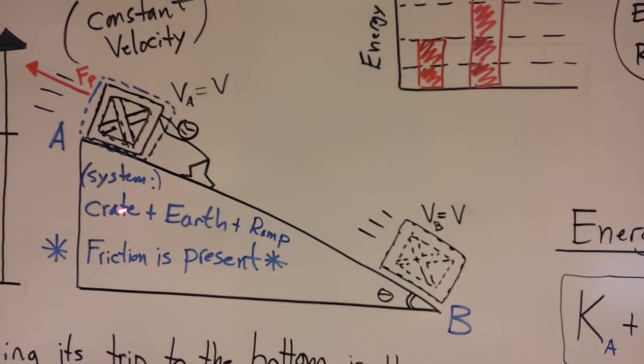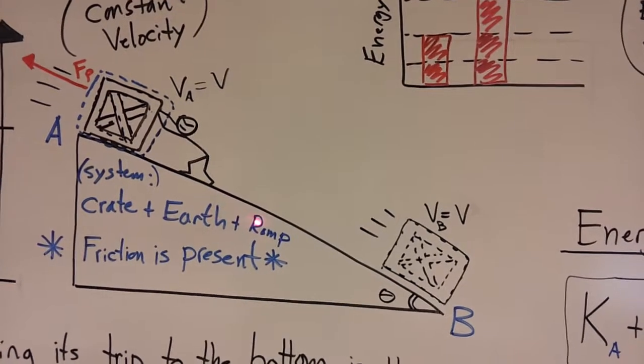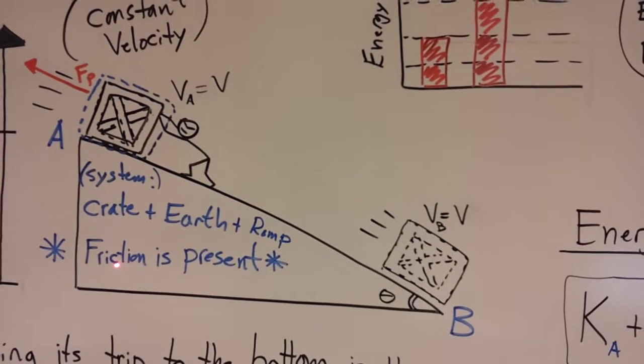We're going to consider the system, the crate, and the earth, and the ramp, and we're going to assume that friction is present.